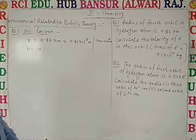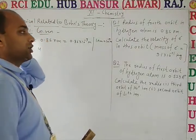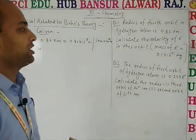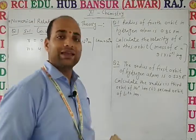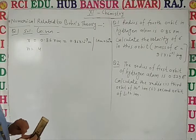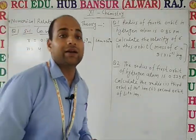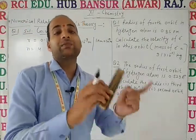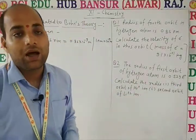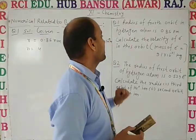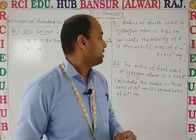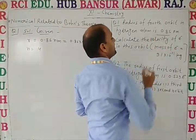Calculate the velocity of the electron in this orbit. Mass of electron is 9.1 × 10⁻³¹ kg. Now, radius is given and we need to find velocity. We cannot find velocity directly from radius using the direct velocity formula. If the orbit and hydrogen atom are given, you can find velocity directly, but here we need a different approach.